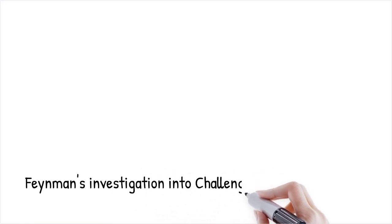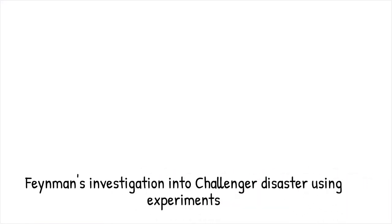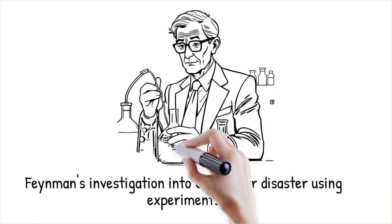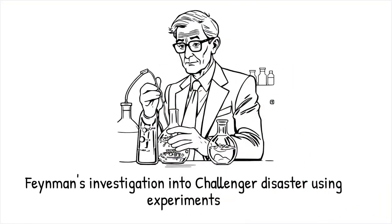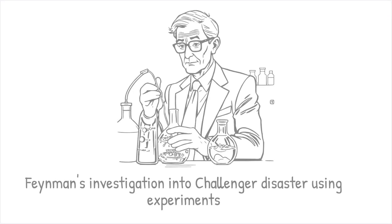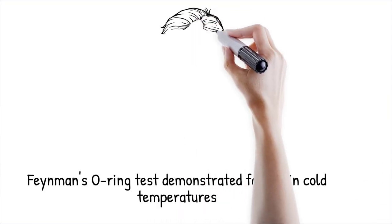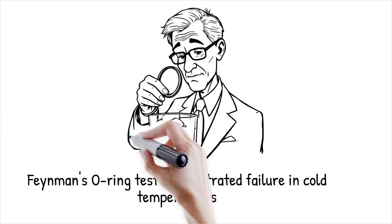Feynman played a critical role in investigating the 1986 Challenger space shuttle disaster using scientific reasoning and hands-on experimentation to uncover the cause. He demonstrated that O-rings in the shuttle's solid rocket boosters lost flexibility in cold temperatures, leading to failure. His simple but direct approach, placing an O-ring in ice water to show its rigidity, provided definitive evidence.